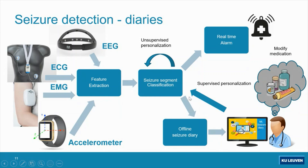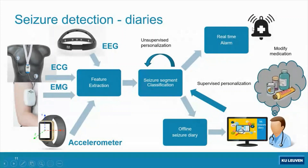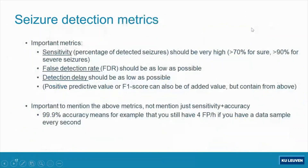It's really important to know how many seizures the patient had and what was the length of those seizures. With input from the doctor, the algorithm can be improved. We also want to provide a real-time alarm so that patients and their relatives know that a seizure is currently occurring.